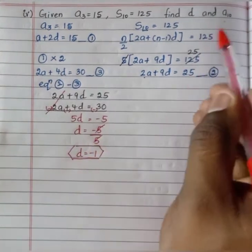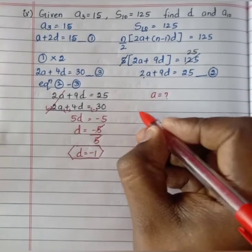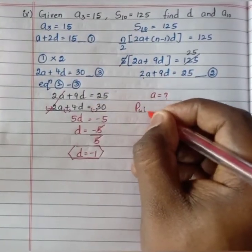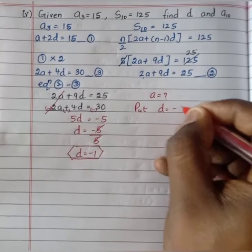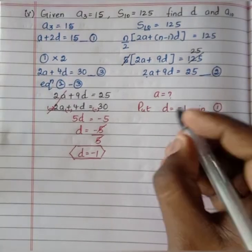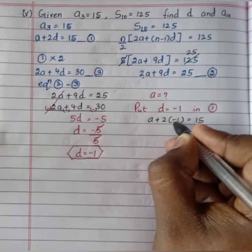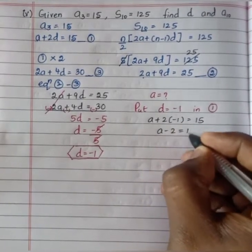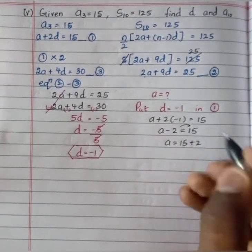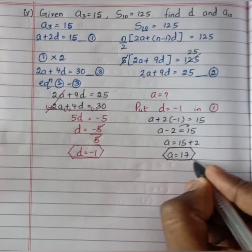Substituting d equals minus 1 into equation 1: a plus 2 times minus 1 equals 15, giving a minus 2 equals 15. Therefore a equals 15 plus 2 which equals 17. We got the first term as 17.